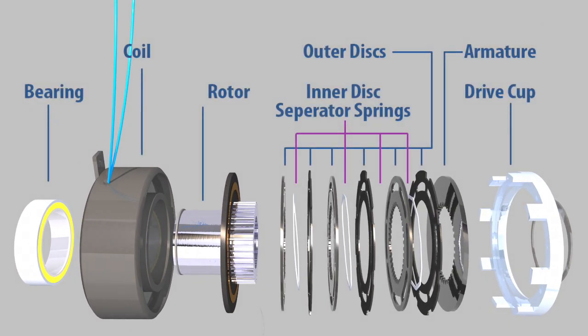The key components in a multiple disc clutch are the bearing, coil, rotor, inner discs, separator springs, outer discs, armature, and drive cup.